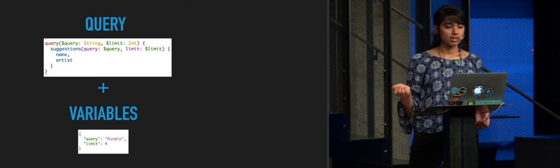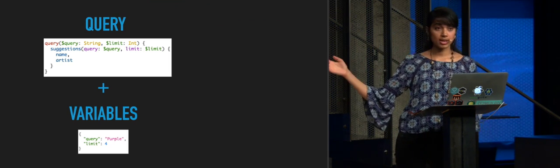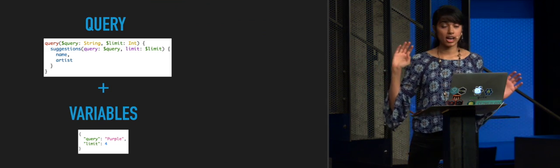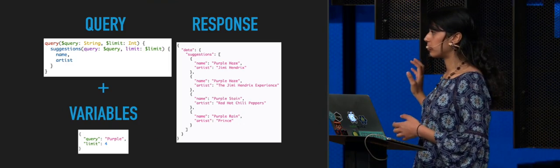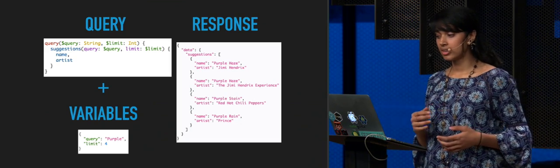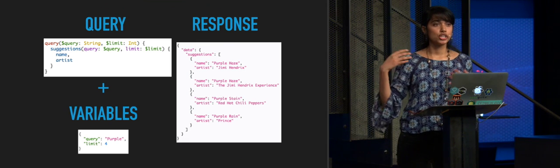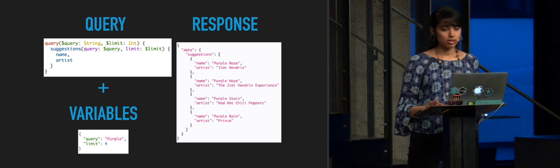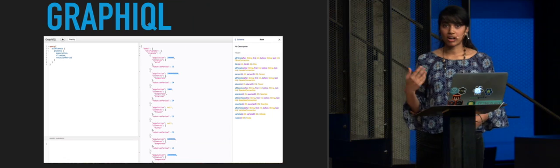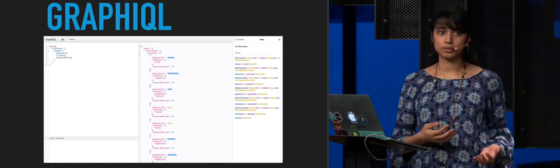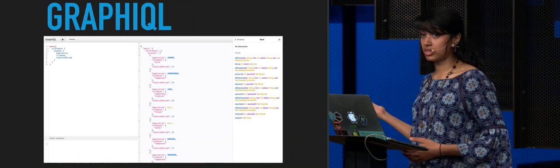If I send a query to ask for song suggestions, and in particular just want the name and the artist, and I send as query variables 'purple' and say I only want four songs, my response would look something like this. The shape of the response exactly matches the shape of the query — I get four responses and only get the name and the artist. It's very declarative, you don't overfetch data, and it's very easy to reason about. One of the other cool things about GraphQL is it comes with this IDE called GraphiQL — a really useful developer tool where you can explore the schema, build up different queries, and see what the actual returned response looks like.